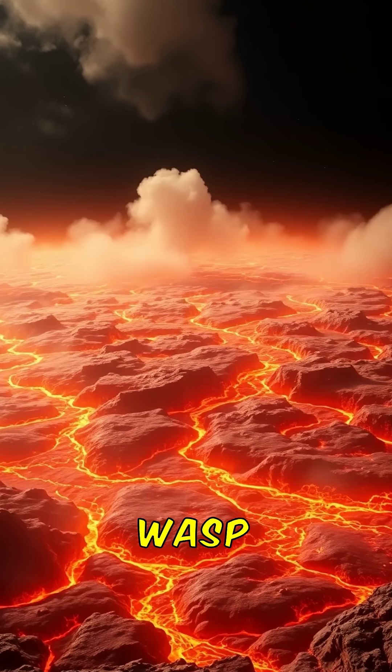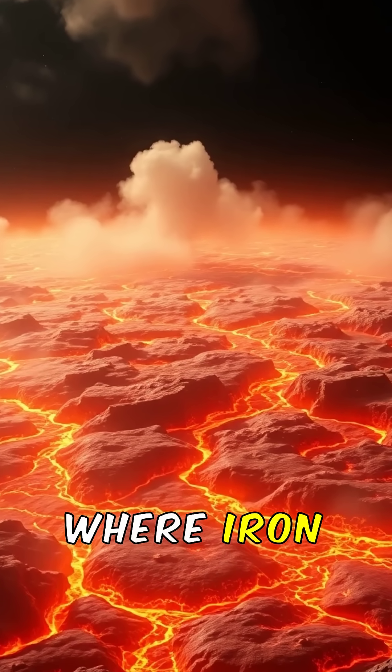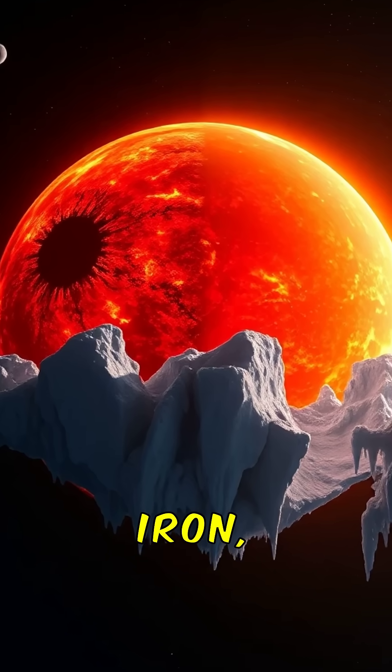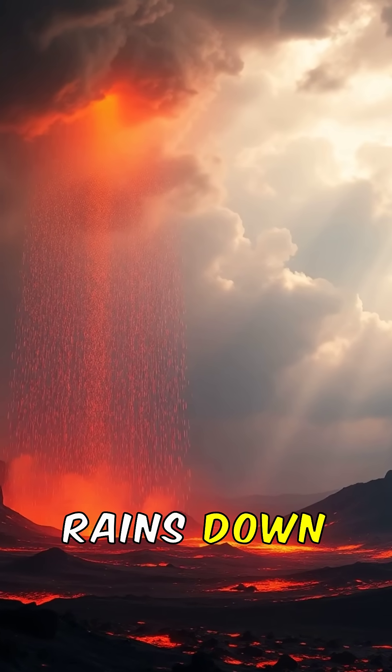We've found a planet, WASP-76b, where iron vapor condenses into rain. It's so hot on one side and cold on the other that iron evaporates and then rains down as molten metal.